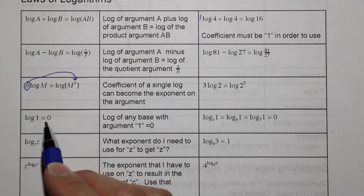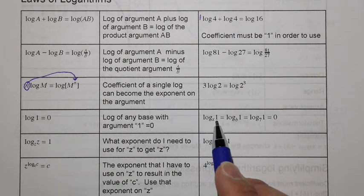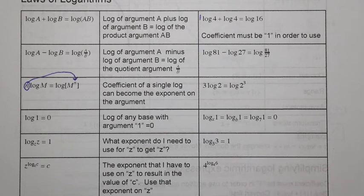Log of any base where the argument 1 equals 0. You can see log base x of 1 = 0, log base b of 1, log base 7 of 1, it all equals 0 because anything to the exponent 0 equals 1.